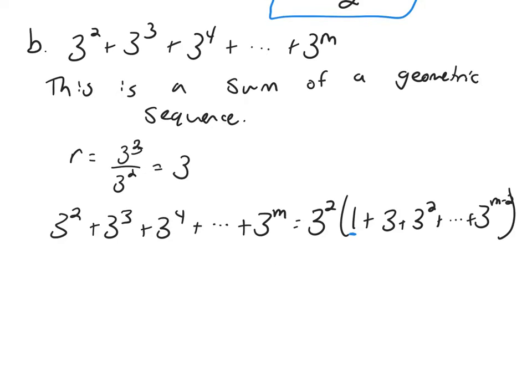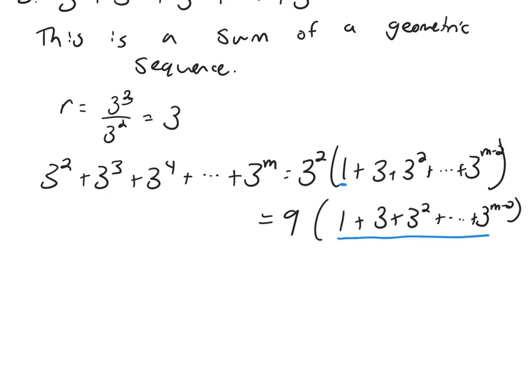So I'm now getting 9 times 1 plus 3 plus 3 squared plus 3 to the m minus 2. So for this part right here, I can now use my summation formula, and this one is actually what we computed in part A. So this was 3 to the m minus 1 minus 1 over 2.